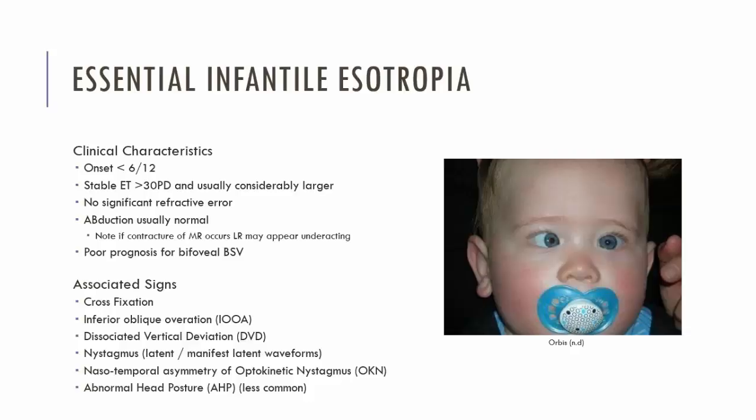In terms of the clinical characteristics of a patient with this condition, we expect that the deviation will develop within the first six months of life. And this esotropia that you see will be large in size — there will be at least 30 prism diopters. And this esotropia can be considerably large; it could be 50 or 60 diopters, for instance.